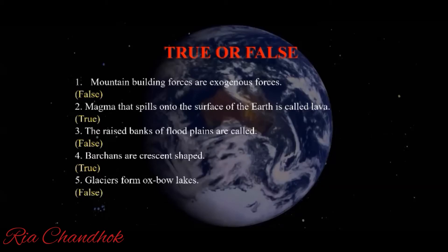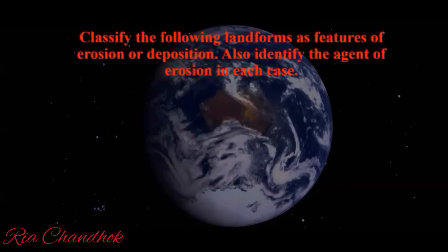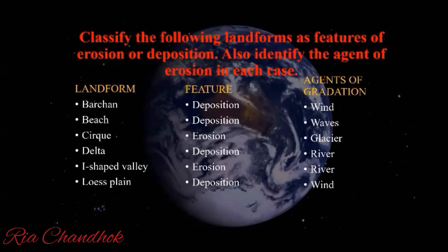Now let's classify landforms as features of erosion or deposition and identify the agent of gradation in each case. Barchan: deposition, agent is wind. Beach: deposition, agent is waves. Cirque: erosion, agent is glacier. Delta: deposition, agent is river. V-shaped valley: erosion, agent is river.